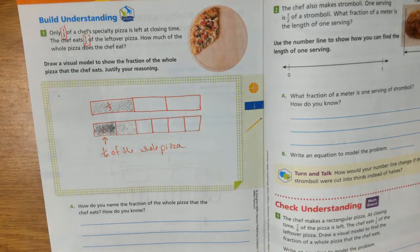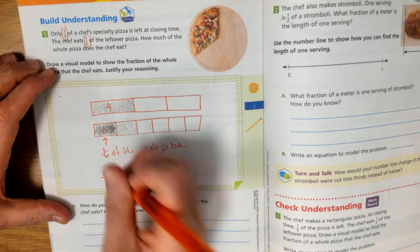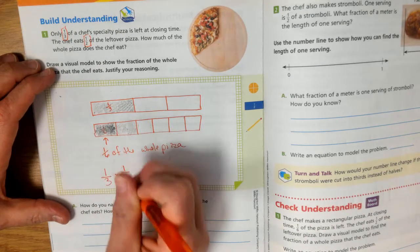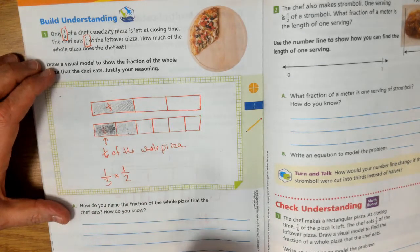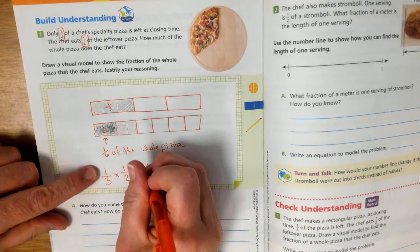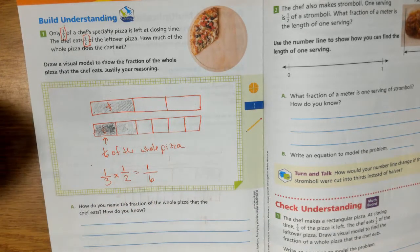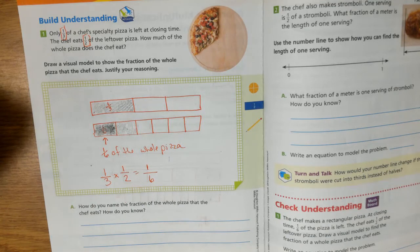So essentially what we're doing is I'm taking my one-third. I'm multiplying it by one-half. One times one equals one. Three times two equals six. So it would be one-sixth.